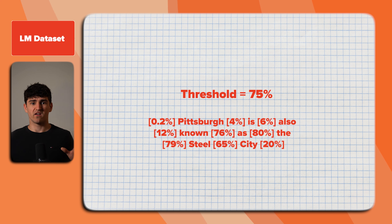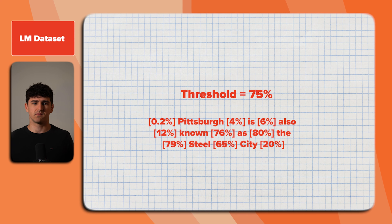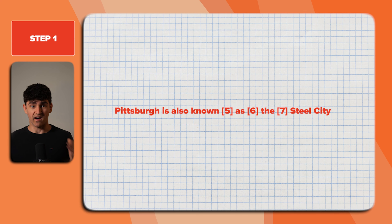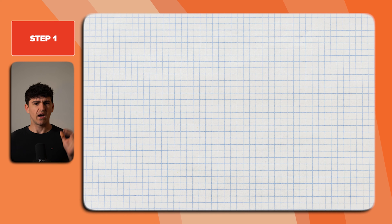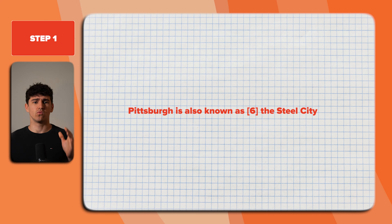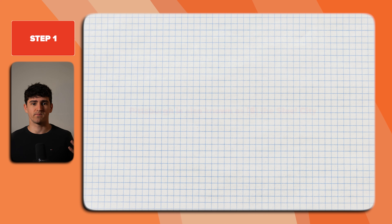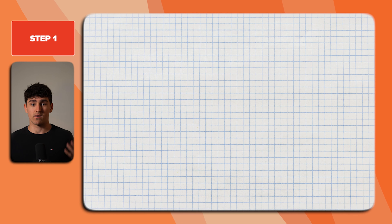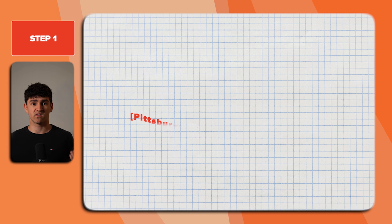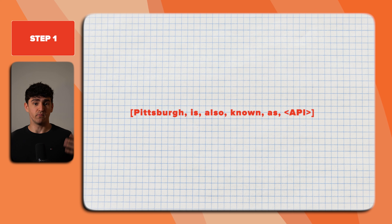We now have up to K candidate positions I. Let's call this set large I. For each of those positions in I, we now sample up to M API calls. To have a better overview, let's stick to one of those positions — position six. To sample multiple API calls, we need to construct a prompt for our large language model by using our input sequence up to position six as a prefix.